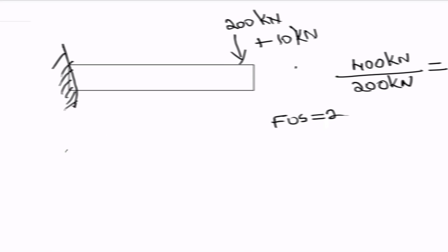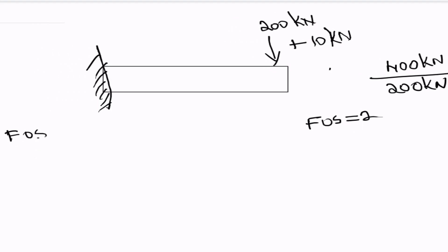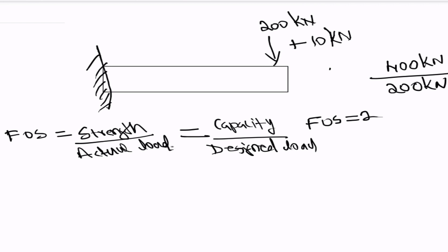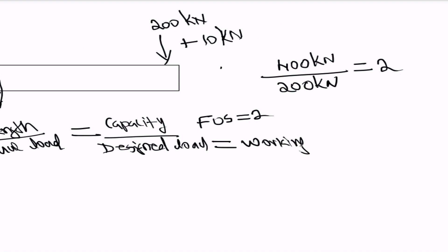From this example, the factor of safety in most cases is the ratio of the strength of that element divided by the actual load on it. This can also be defined as the capacity of that element divided by the design load. The design load is simply the actual load — it is also called the working load or sometimes the service load.